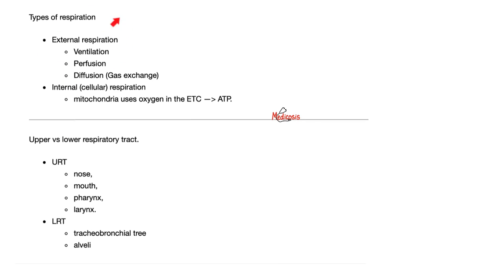We have two types of respiration: external respiration and internal respiration. When you breathe in and breathe out — inhalation, exhalation, inspiration, expiration — you're doing external respiration. You also have internal breathing or cellular respiration: the story of your mitochondria with its TCA cycle and electron transport chain, making ATP. You're burning glucose in the presence of oxygen and getting energy while releasing carbon dioxide, which you will then exhale.